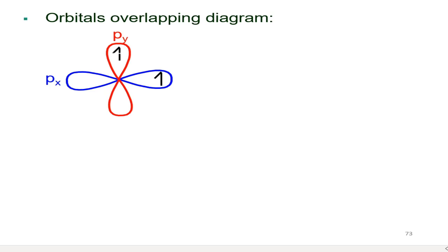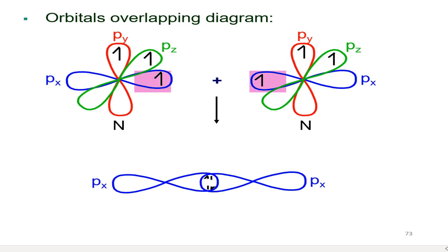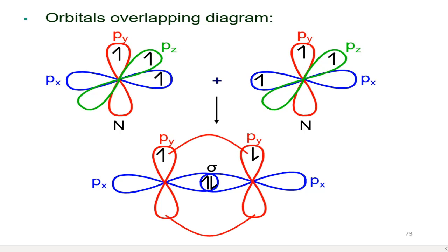It means 2 nitrogen atoms will share the 3 electrons to reach the octet configuration. The first electron in 2p orbital will overlap end to end and become sigma bond. The second electron in 2p orbital will overlap sideways and become pi bond.